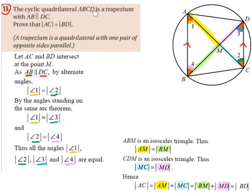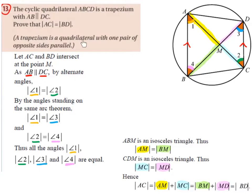The cyclic quadrilateral ABCD is a trapezium with AB being parallel to DC. We have a trapezium, which is a four-sided shape that has one set of parallel sides. We need to prove that AC is equal to BD. A trapezium is a quadrilateral with one pair of opposite sides being parallel.